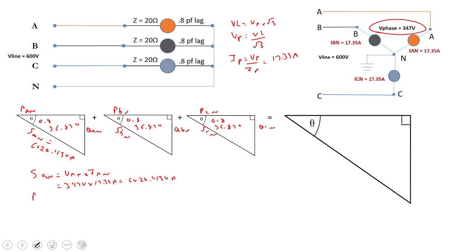To figure out the true power P_A-to-N, I'll use the power factor. I take my apparent power S_A-to-N and multiply it by the power factor, or cosine theta, and that comes to about 4816.36 watts.